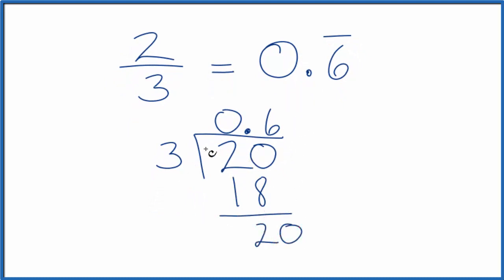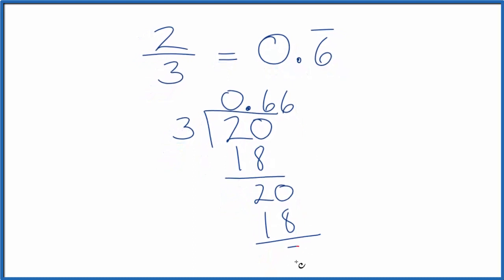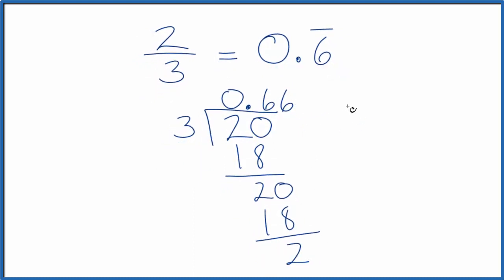Move over another decimal point, make this 20. 3 goes into 20 six times. 6 times 3 is 18. 20 minus 18, that's 2. And you can see the 6, it's just going to keep repeating.